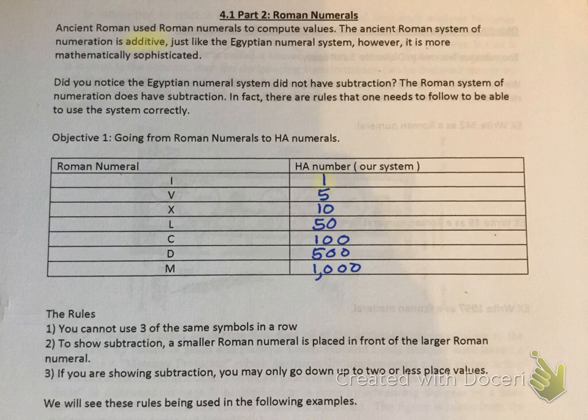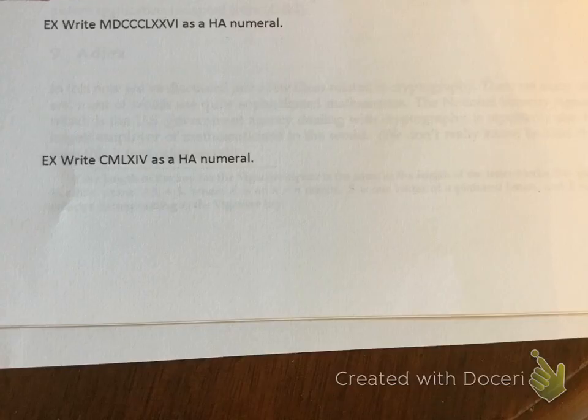Here are the rules. You cannot use more than three of the same symbol in a row. This is very important because, for instance, if I want to represent 40, I can't say XXXX. That's not allowed because I can only use three X's. To show subtraction, a smaller Roman numeral is placed in front of a larger Roman numeral. If you are showing subtraction, you may only go down up to two or less place values. We're going to see these rules being used in the following examples.